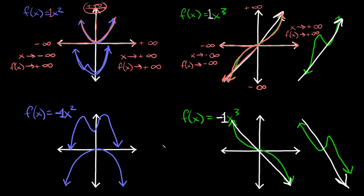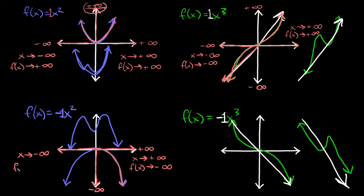These two bottom cases are basically the opposite of the ones above. For f(x) = -x², as x approaches positive infinity, the function is approaching negative infinity — sloping all the way down. And as x approaches negative infinity, it's also going down towards negative infinity. So the function approaches negative infinity on both ends.